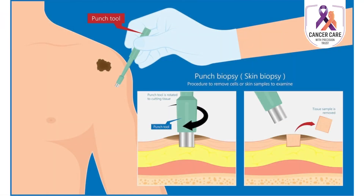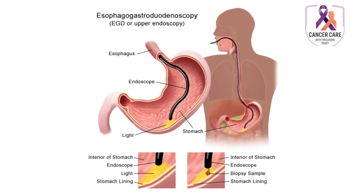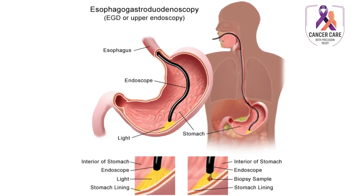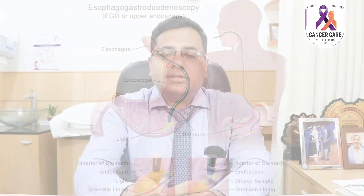Number four is shave biopsy or punch biopsy, where the doctor takes a scraping of the tissue of the skin and that tissue is sent for biopsy. Number five is endoscopic biopsy, where an endoscope is used. An endoscope is a flexible tube with a camera which helps the doctor to see inside a body cavity — for example, the esophagus, stomach, or bladder. With the use of the endoscope, a doctor can visualize a tumor in those areas and take a biopsy sample.